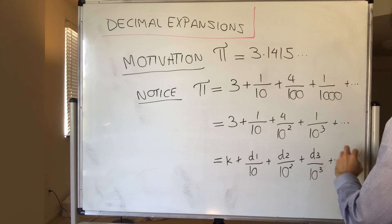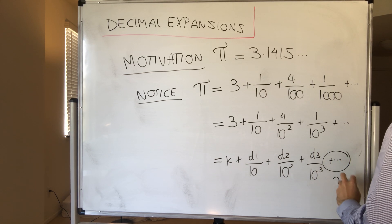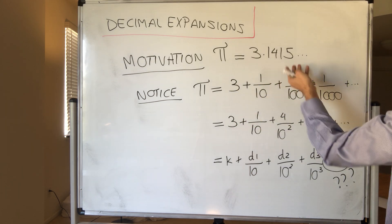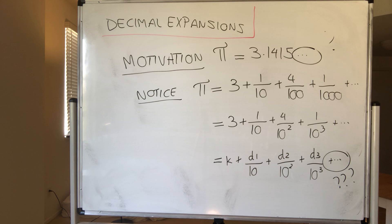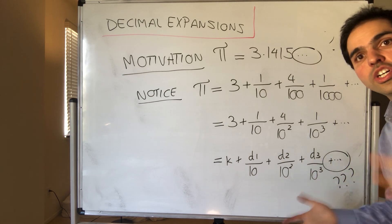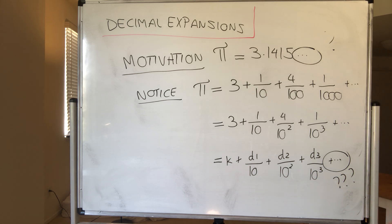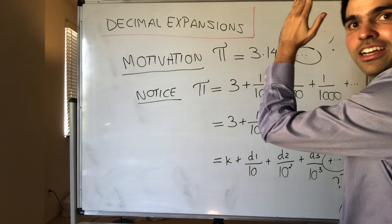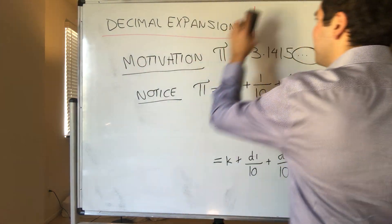But the question is, what is dot dot dot here? What does it mean to say pi is 3.1415 something? And remember, at this point, we don't know what the series is. We just know what a sequence is. But luckily, we can actually define that more precisely, namely, by just considering step-by-step terms.